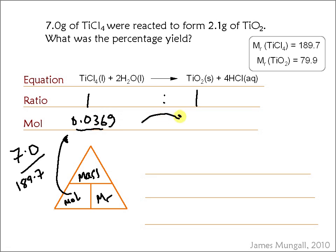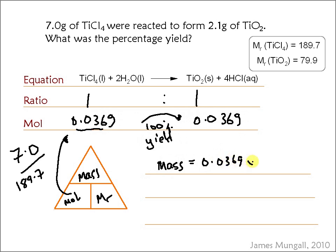So if this was 100% yield, it would give that same amount in moles of the product. Now we want to convert this number of moles into a mass. To do that, we take mole times MR, and multiply by the MR of TiO2, which is 79.9, giving 2.95 grams.